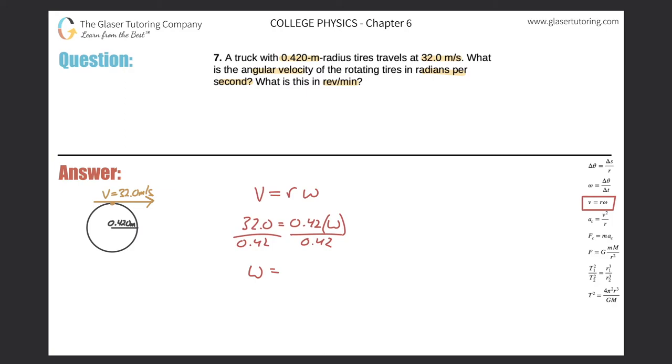And then the angular velocity here will be equal to 32 divided by 0.42, so comes out to about 76.2.